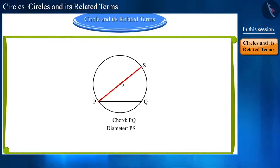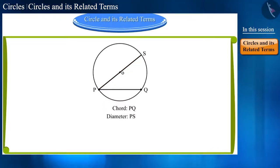Here, line segment PS is the diameter of the circle. Friends, look at this diameter PS carefully. It is made up of two radii. That is, the length of the diameter is twice the radius.